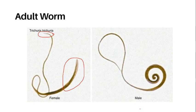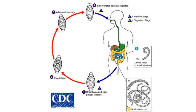These eggs are found in the soil where they mature for about 15 to 30 days before they can become infective or have the ability to infect an unsuspecting host. Once these embryonated eggs are ingested, they end up in the small intestine, where they hatch and release larvae, which then mature into adult worms. Once the male and female adult worms reproduce, the female can lay up to 20,000 eggs per day, until they are again passed in the stool onto the soil and the cycle continues.